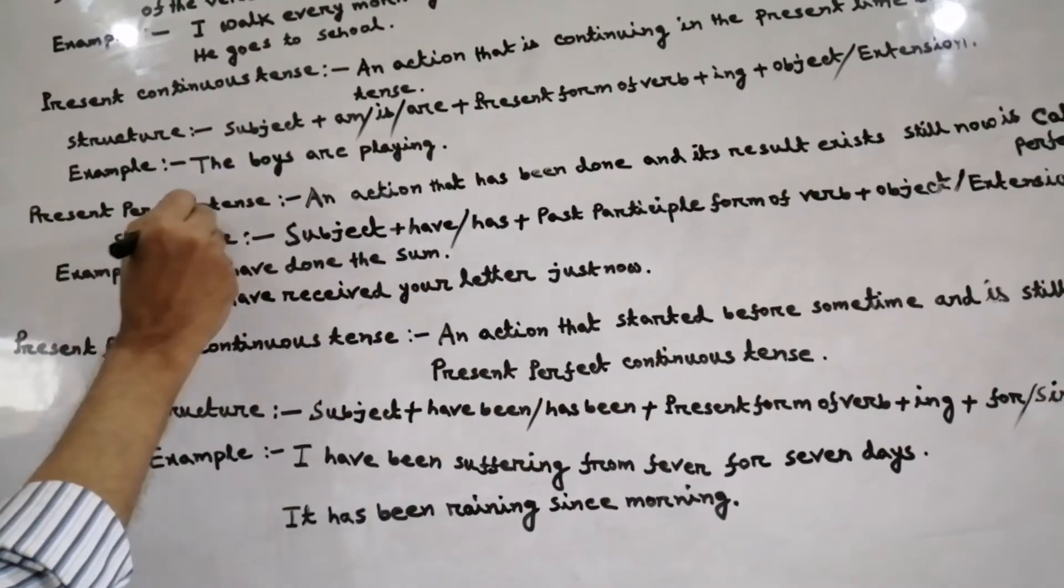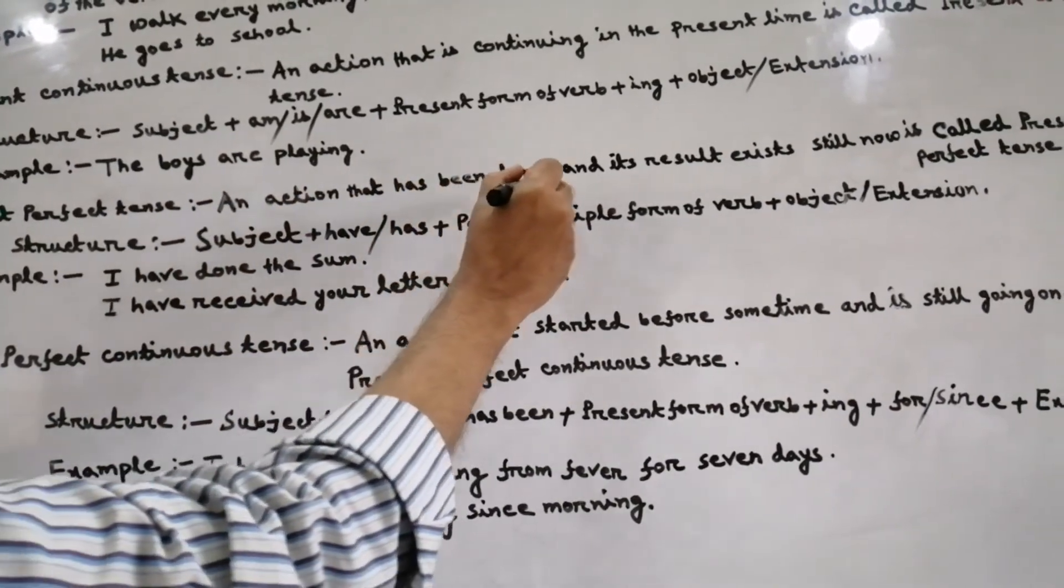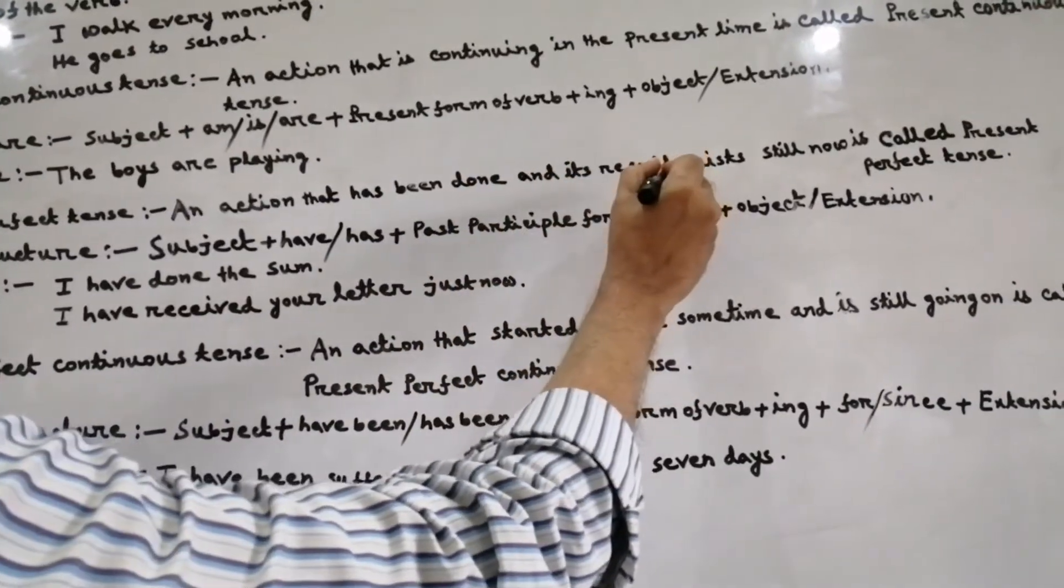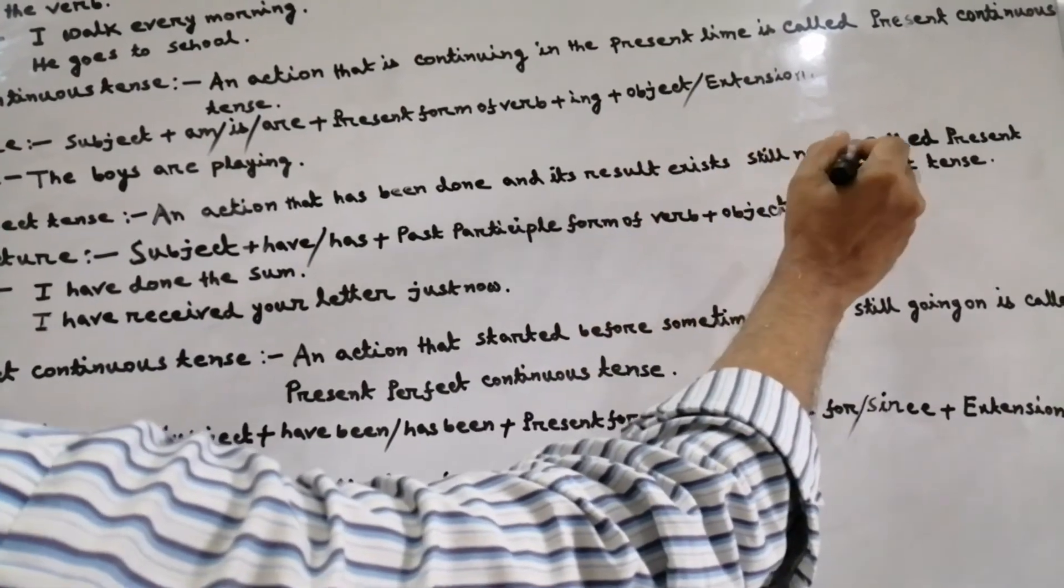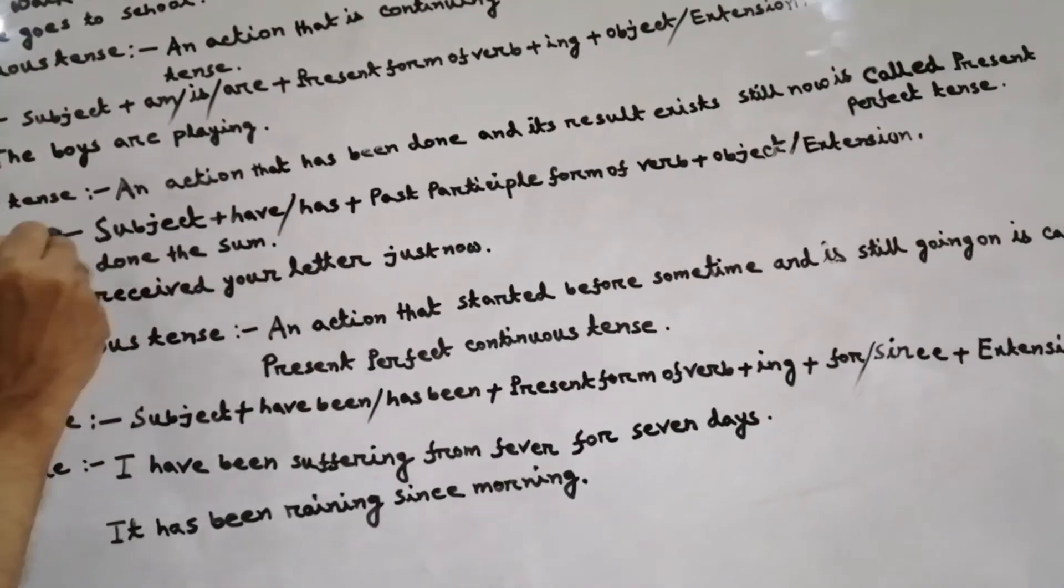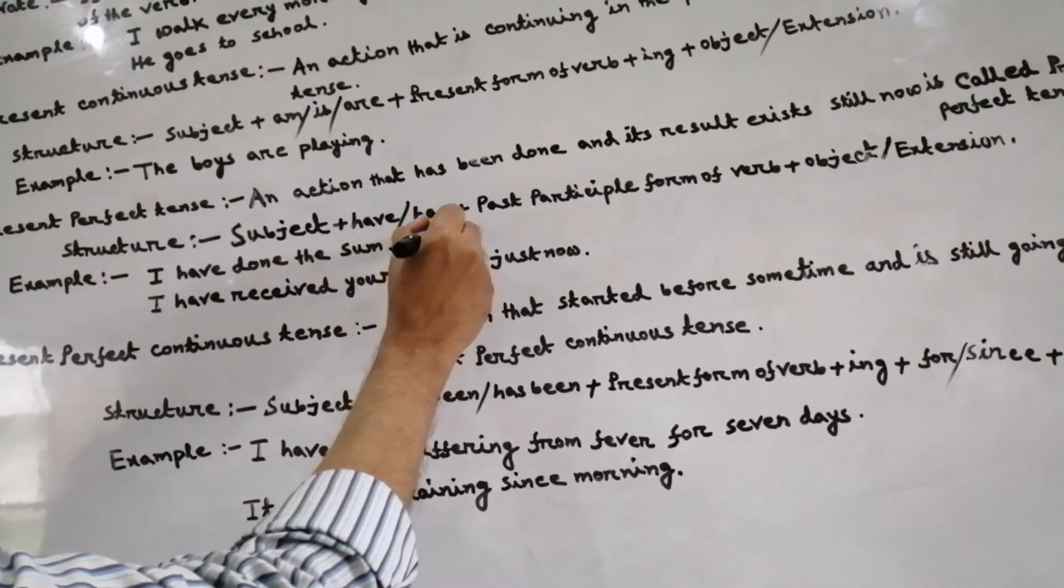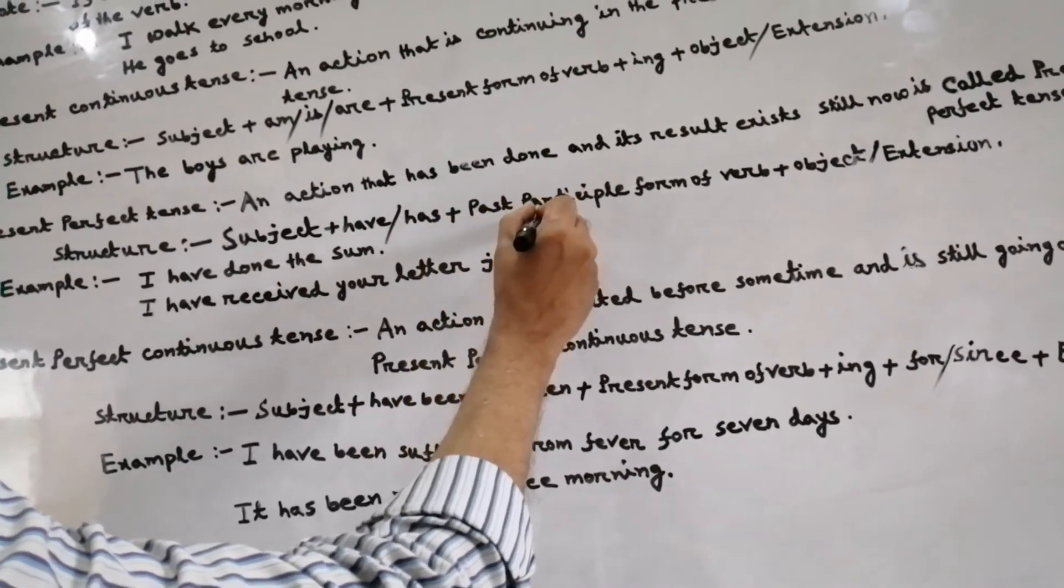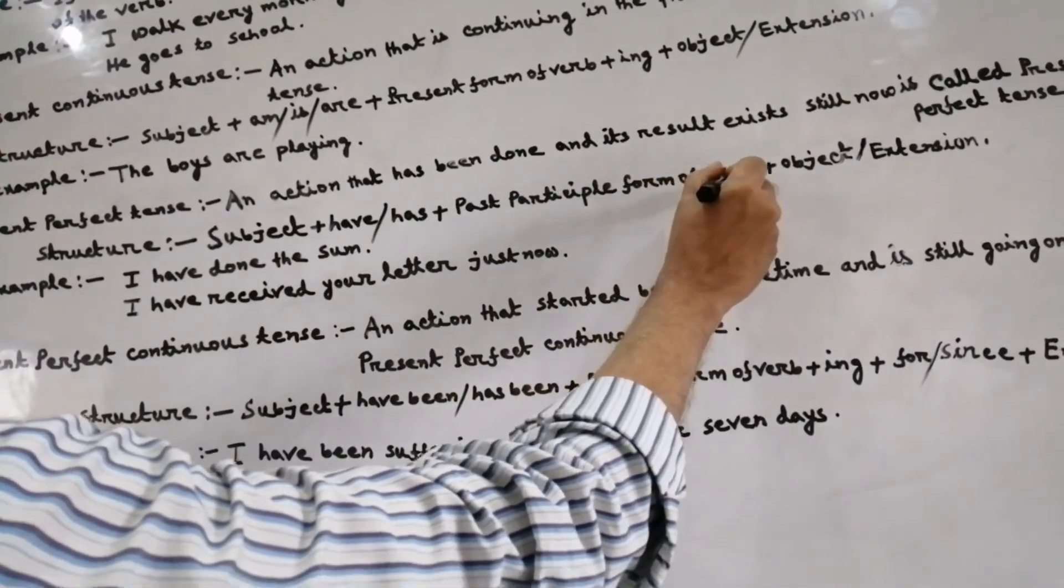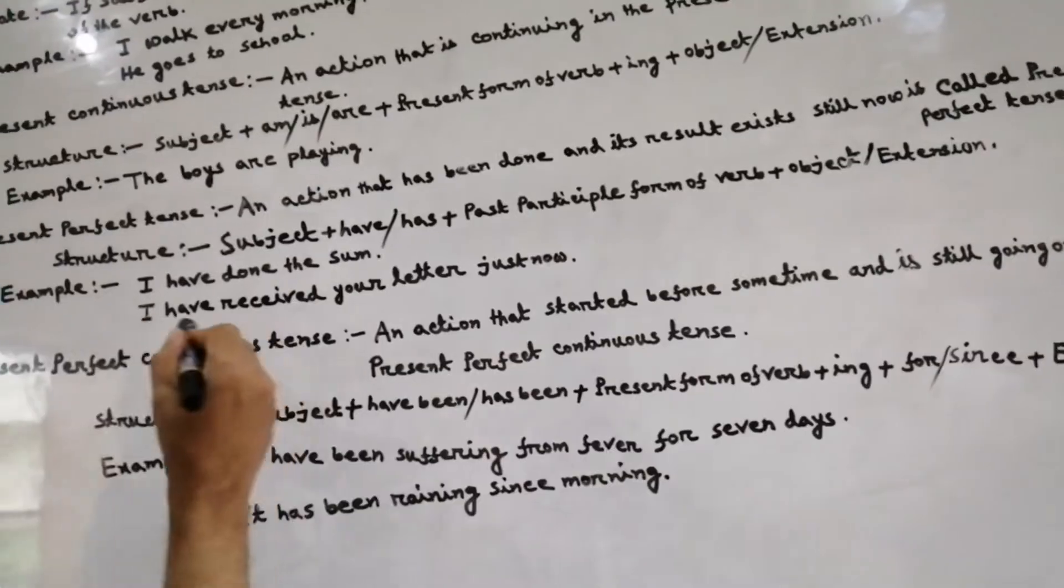Present perfect tense - what is present perfect tense? An action that has been done and its result exists still now is called present perfect tense. Structure: subject plus have or has plus past participle form of verb plus object or extension.